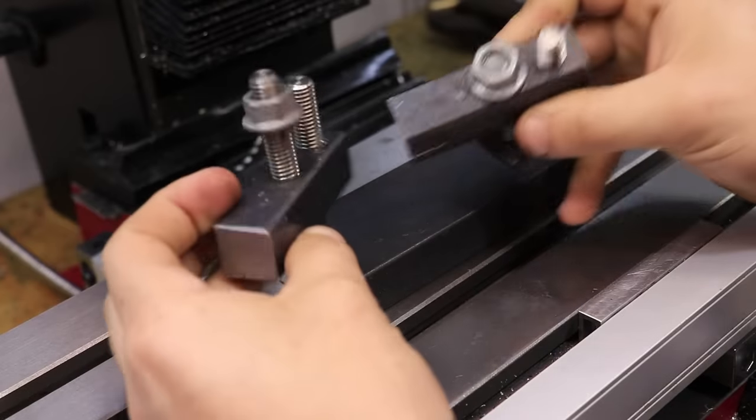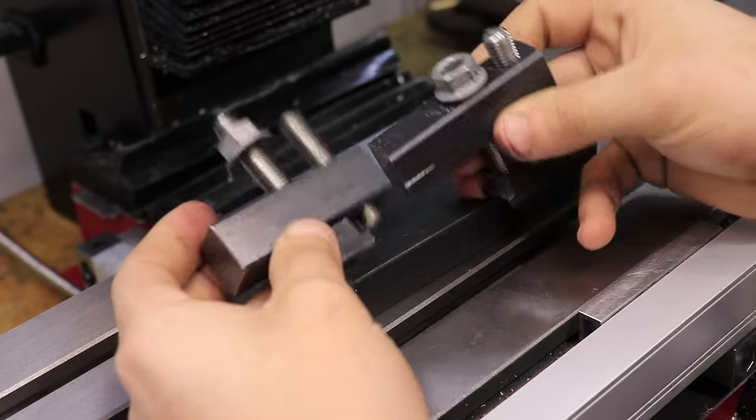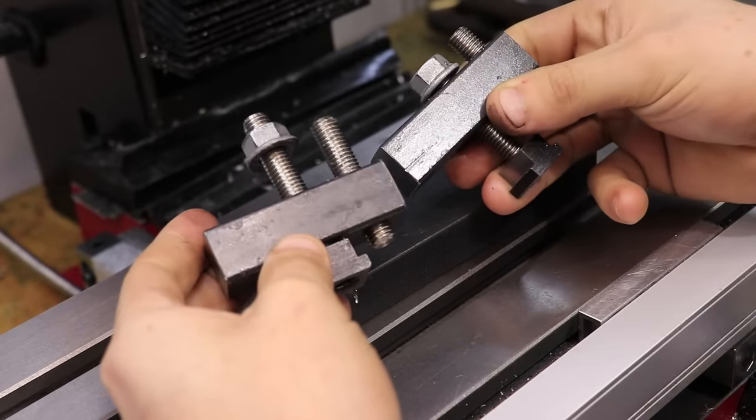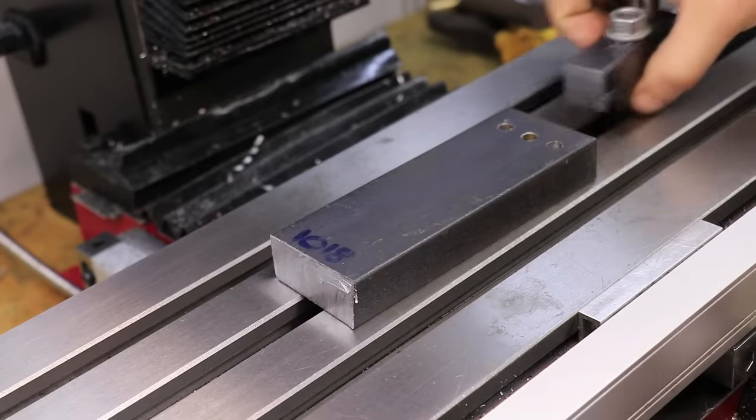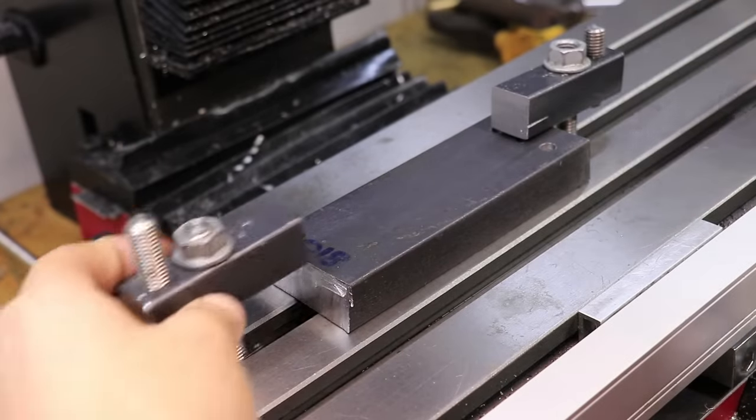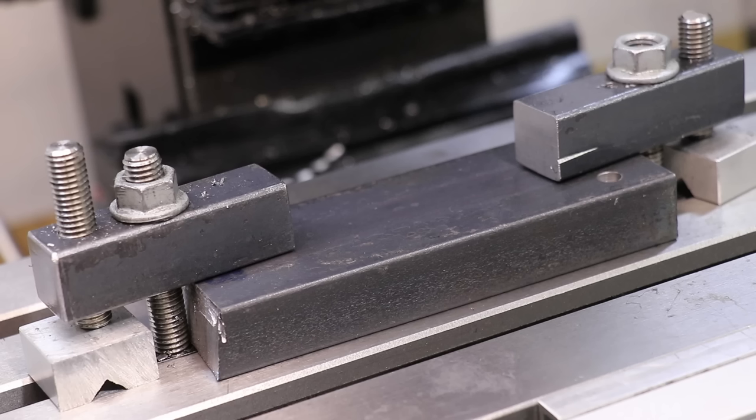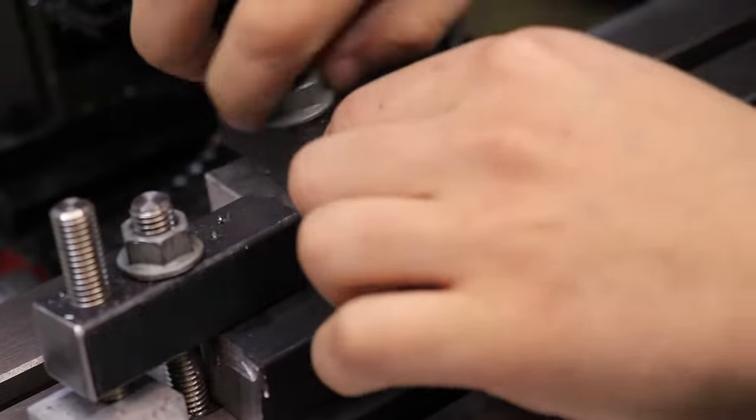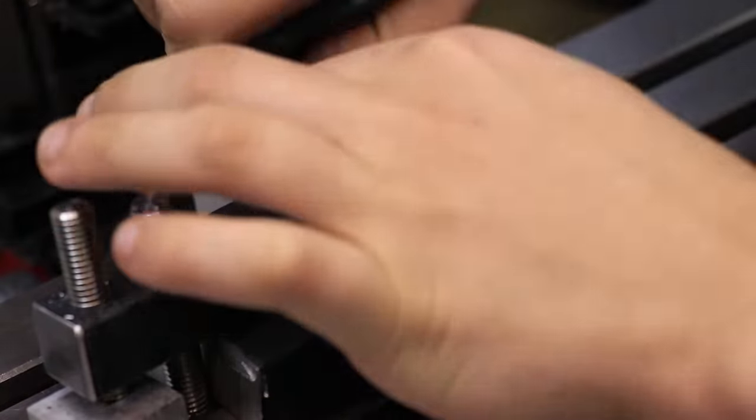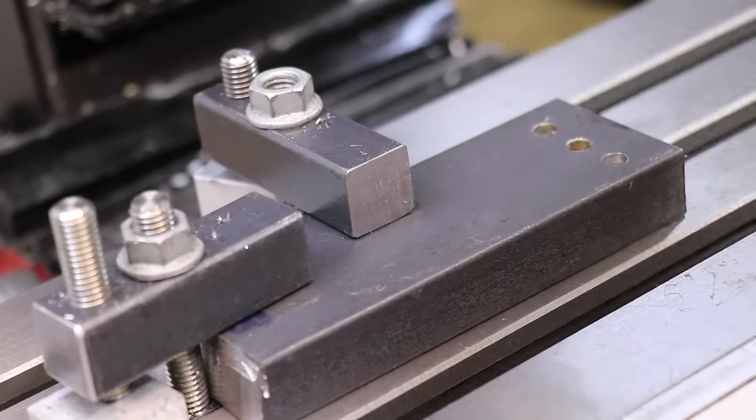Now the most common way of doing that would be to use a clamp of some type in conjunction with the t-slots and this method works fine, but the most obvious drawback is using this method you can't machine the entire top surface at once. So as you machine the part you will need to play musical chairs with the clamps and move them around.